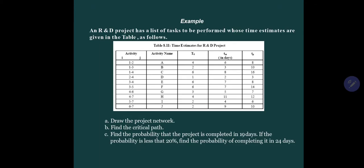Here one example is given. An R&D project has a list of tasks to be performed whose time estimates are given in the table: T0, TM, and TP in days are given, activities are given, activity names are given.